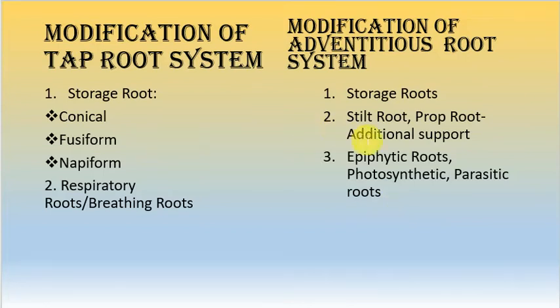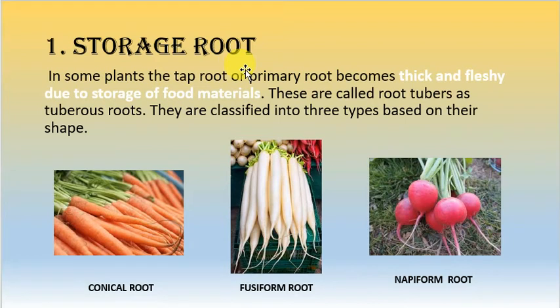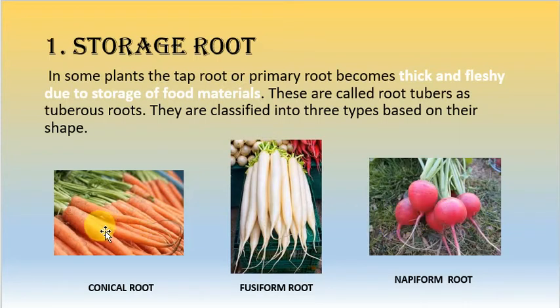First we will study the modification of the taproot system for storage and respiratory purposes. In some plants, the taproot or primary root becomes very thick and fleshy — it gives mechanical support, holds the plant in the soil, and also stores food material. Due to the storage of food, these roots are known as root tubers or tuberous roots.